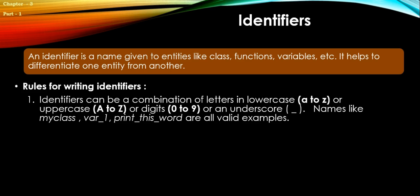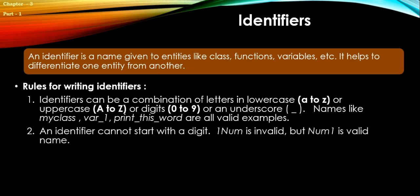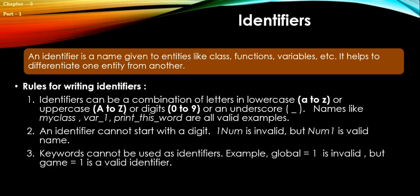An identifier cannot start with a digit. That means 1num is invalid, but num1 is a valid name. Number three: A keyword cannot be used as identifiers. For example, global = 1 is invalid because global is a keyword in Python. But game = 1 is a valid identifier because game is not a keyword.